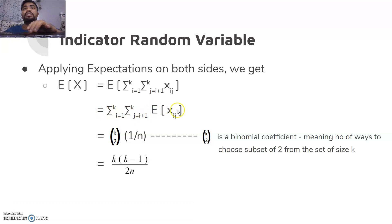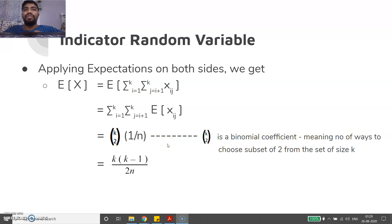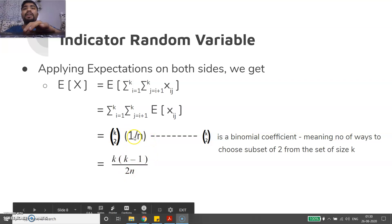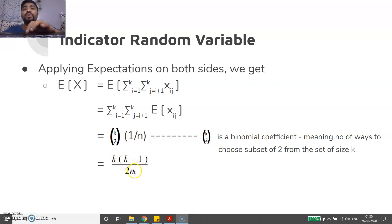We find the expectation of X = summation over i from 1 to k and j from i+1 to k of X_ij. Taking expectation on both sides, we apply it to X_ij. The number of pairs from k people is C(k,2) = k! / ((k-2)! × 2!) = k(k-1)/2. Multiplying by the probability 1/n gives E[X] = k(k-1) / (2n).